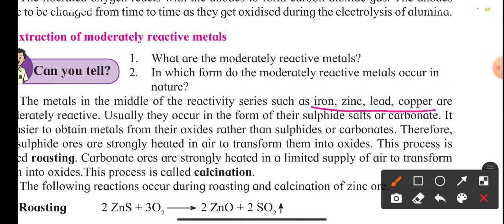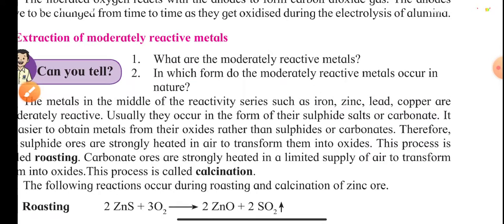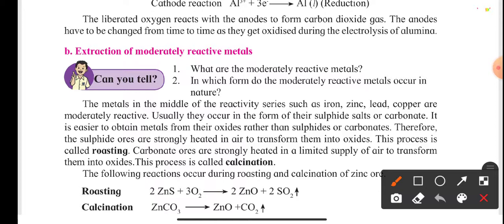Iron, zinc, lead, and copper are called moderately reactive metals. These metals usually occur in their sulfide salts and carbonates. It is very difficult to extract zinc from zinc sulfide or zinc carbonate. Instead, if we have zinc oxide, it is very easy for us to obtain zinc from that oxide.